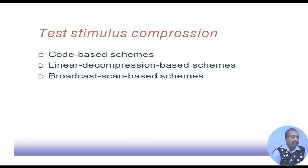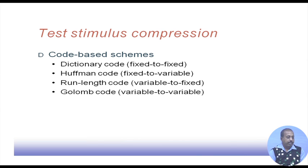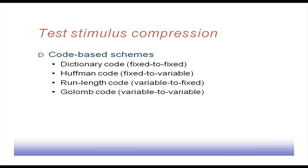For stimulus compression, as mentioned, there are code-based schemes, linear decompression-based schemes, and broadcast scan-based schemes. Code-based schemes have four categories. Fixed-to-fixed coding: the input stimulus chunk and the generated code are both fixed width. Fixed-to-variable coding: the input chunk is fixed but the code length is variable. Variable-to-fixed: the input chunk length is variable but the code is fixed length. Variable-to-variable: both input chunk and code are variable.